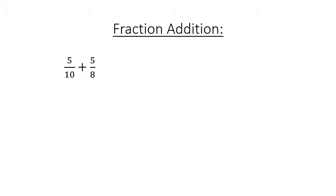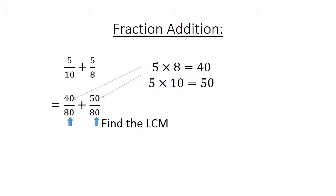Fraction addition. 5 over 10 plus 5 over 8 equals 40 over 80. Find the lowest common multiple. And then you times 5 times 8 equals 40, and 5 times 10 equals 50. 90 over 80 equals 1 and 1 over 8.